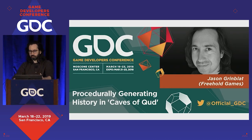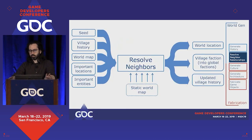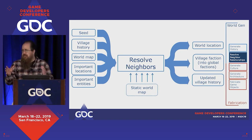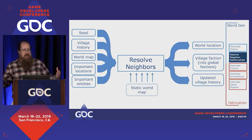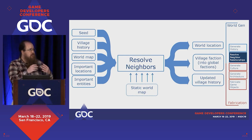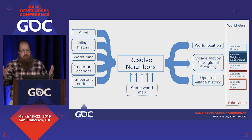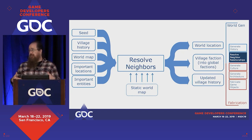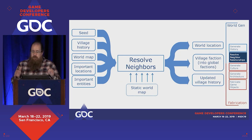Next we enter the second step — resolve neighbor relationships — and Brian will tell you about that, ending the world generation phase. We have villages developed at an extremely abstract level; they haven't been reified into the world at all. Some relationships are still extremely abstract — for instance, a village might know that they worship a creature, but at this point in generation they don't even know which creature. We need to reify it further.